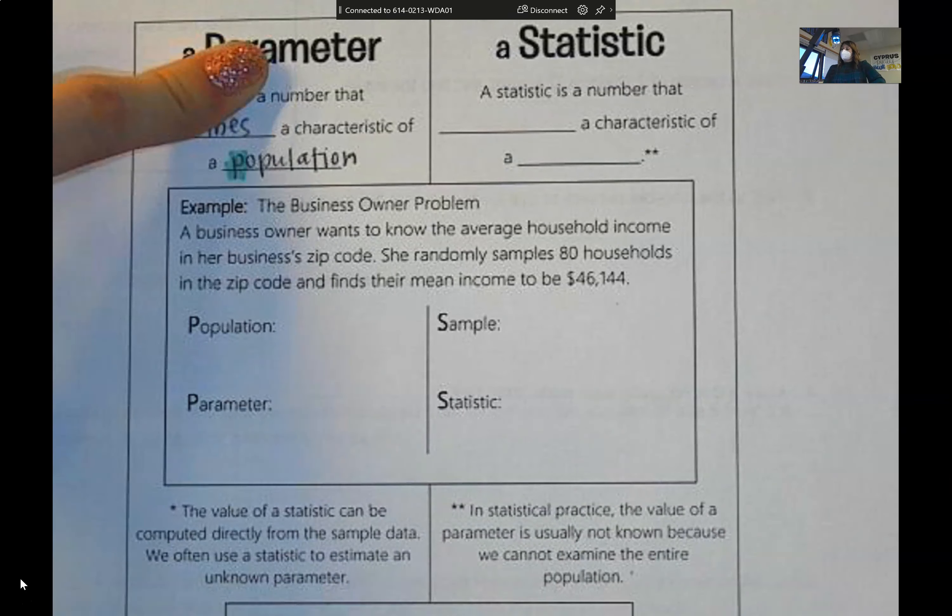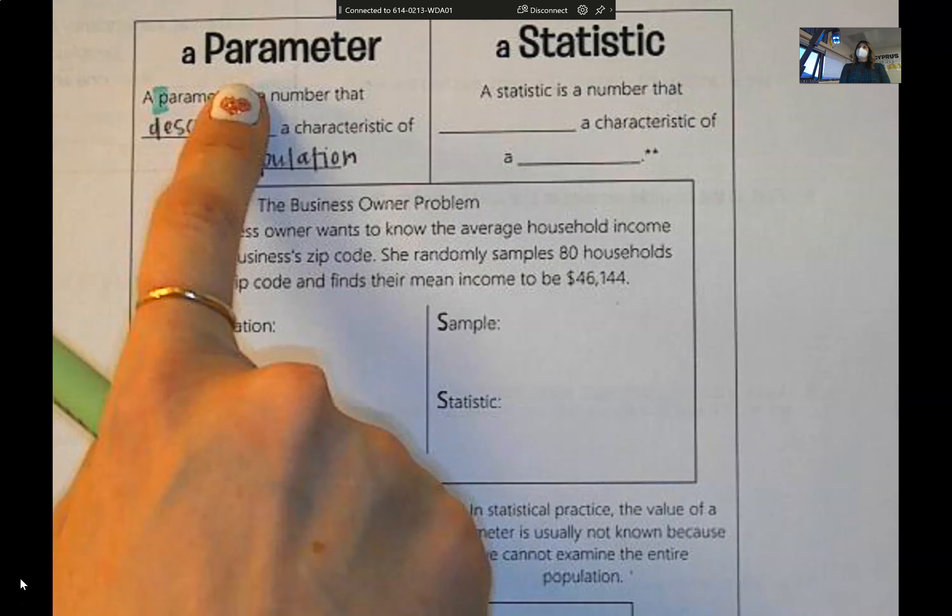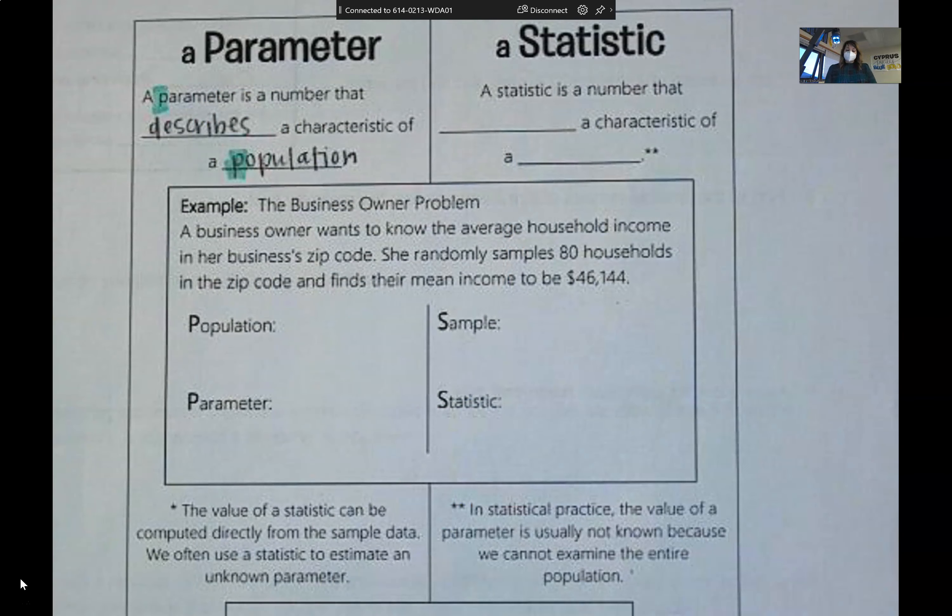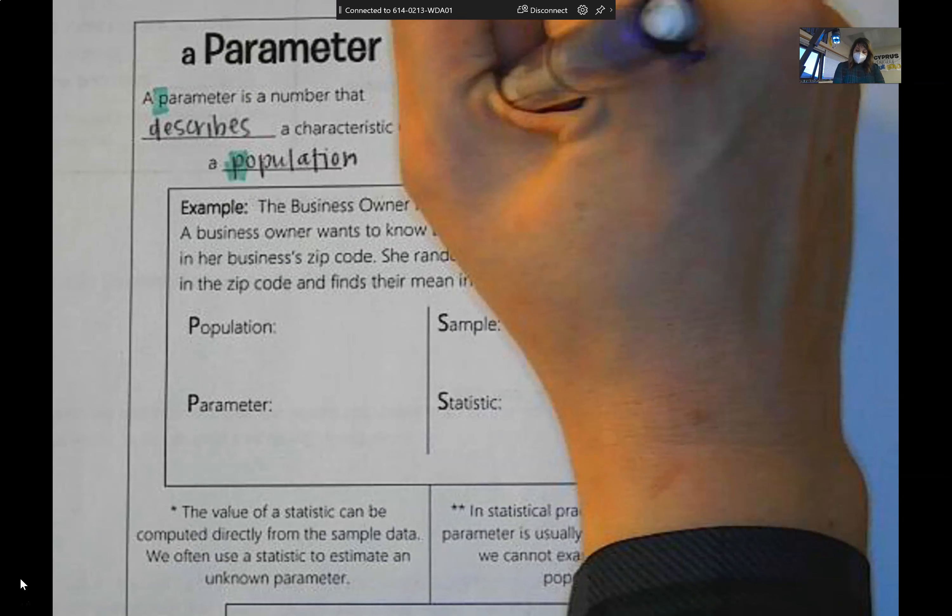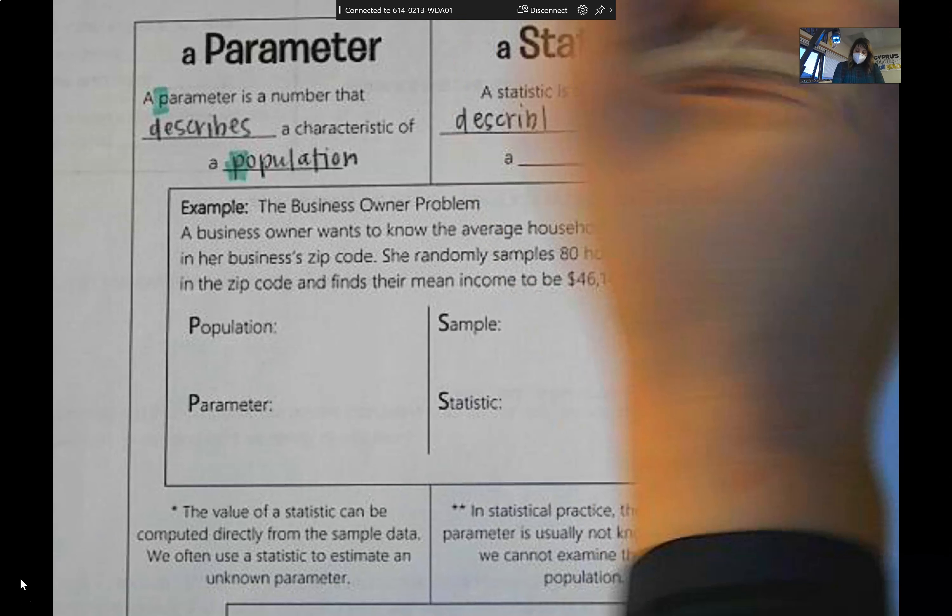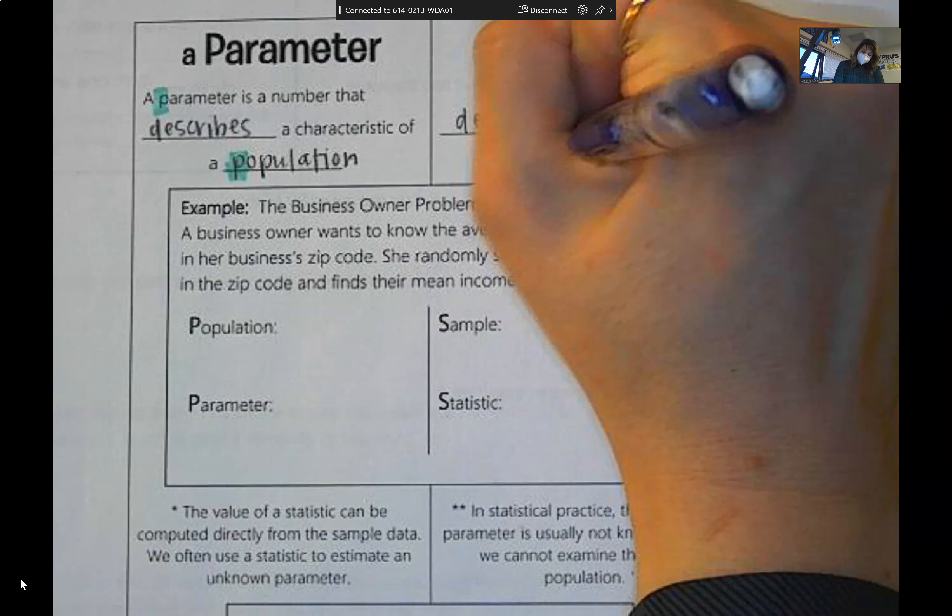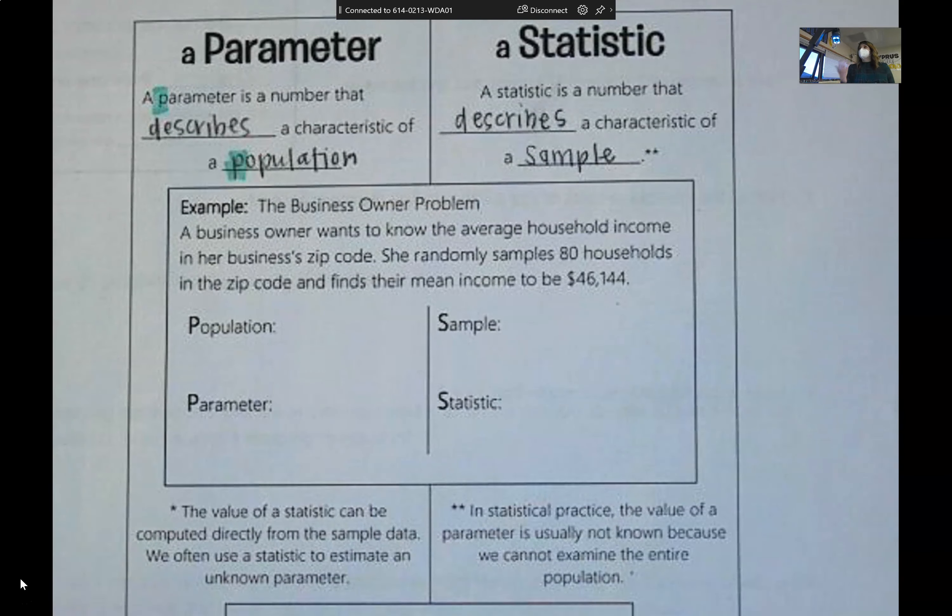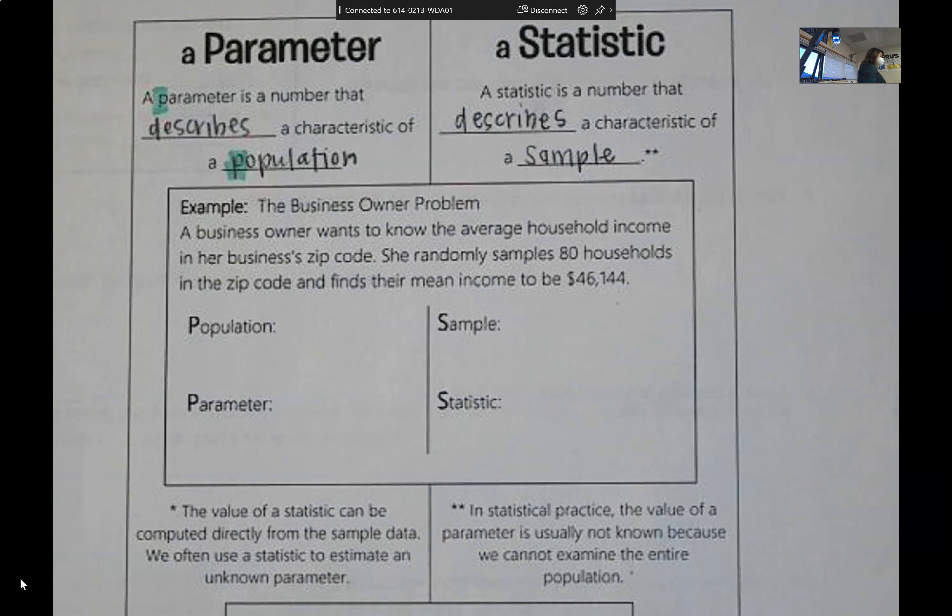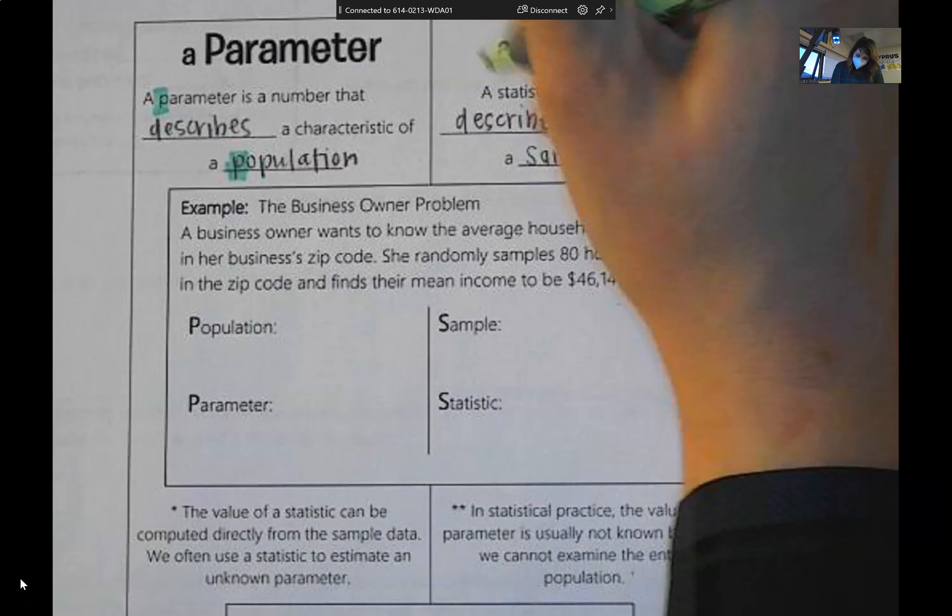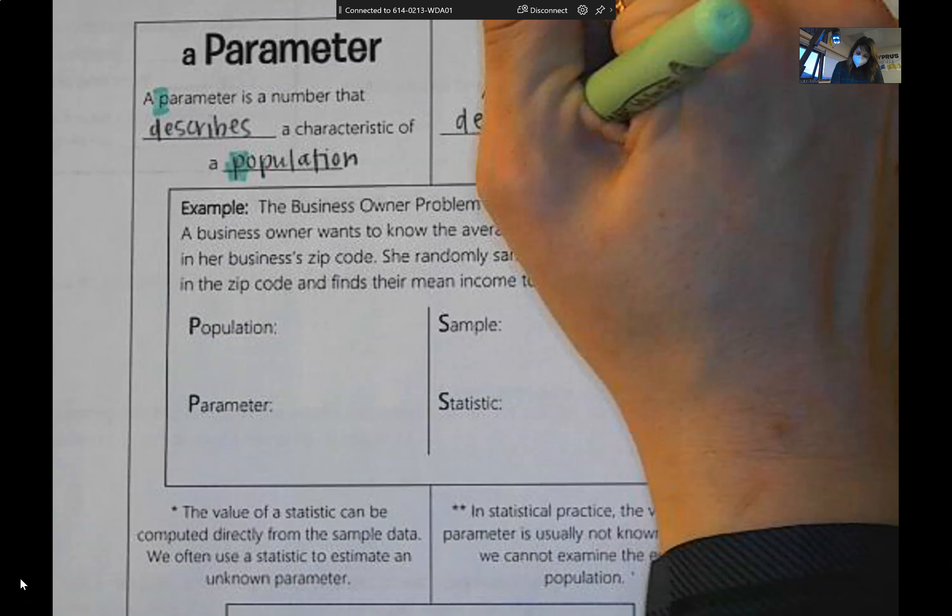Either we literally can't, or it's just unrealistic or too costly. So unfortunately these didn't line up, but these two things go together. So how we get around that, how we get around not knowing a parameter is by using a statistic. So a statistic is a number that describes the sample that we took from the population.